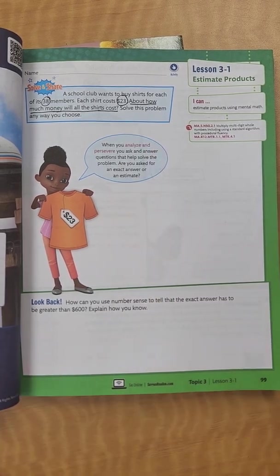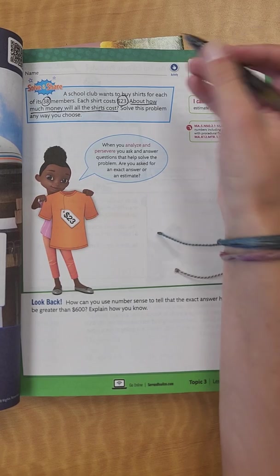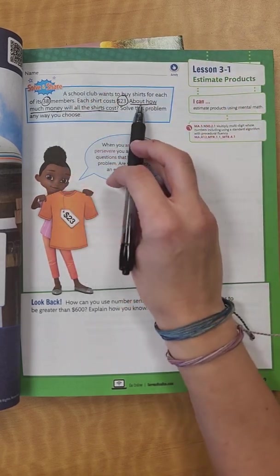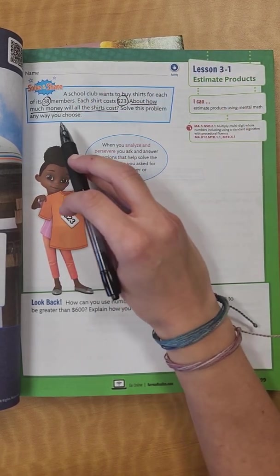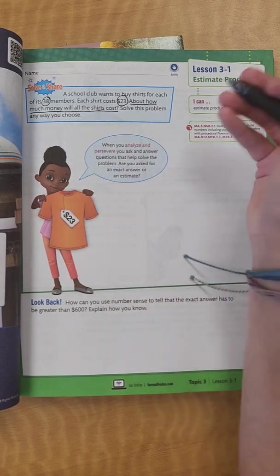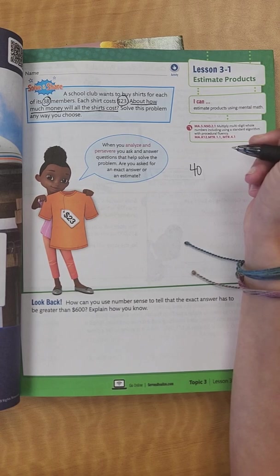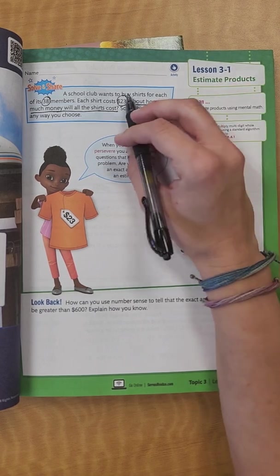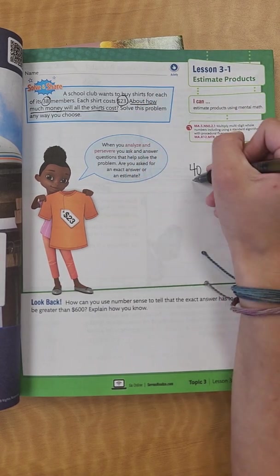I'll show you what I would do if I was doing this problem. Since I'm looking for an about how many, I'm going to estimate that my 38 members is about 40. So we're going to round it to about 40, and then each shirt costs about $20.